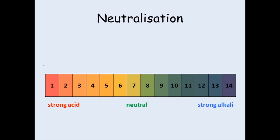Let's go back to our pH scale. Neutral chemicals have a pH of 7. Now, if you're using the same amount of acid and alkali, you can't just choose any acid and any alkali to react together and end up with a pH of 7. For instance, if you start with an acid at a pH of 5 and add it to the same amount of alkali, that alkali will need to be a pH of 9. That's because they're both the same distance from pH 7, so they're going to react together and balance out at pH 7.